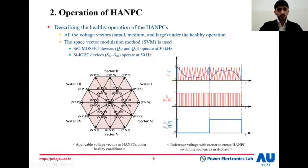However, the switching of hybrid ANPC is a bit unique and different from other topologies, while we are using the MOSFET switch to be operated at very high frequency. In this case, it's 30 kilohertz, while the IGBT is used with lower switching frequency. In this case, it's 50 hertz, which is the fundamental frequency, as shown in this figure.